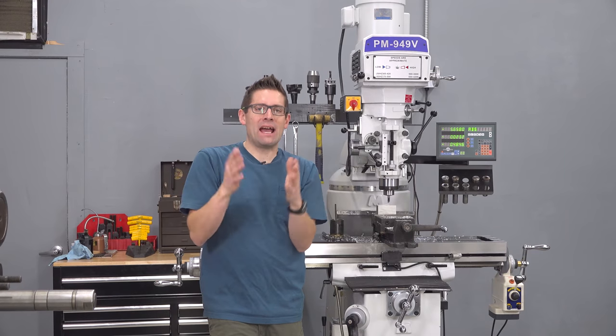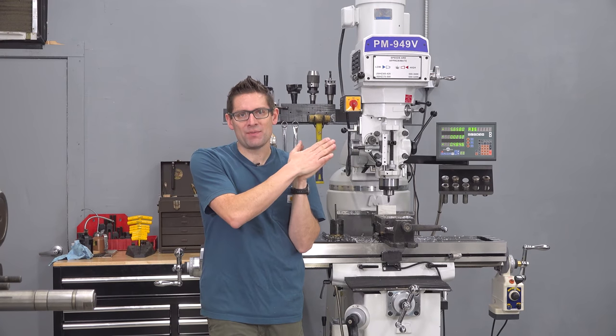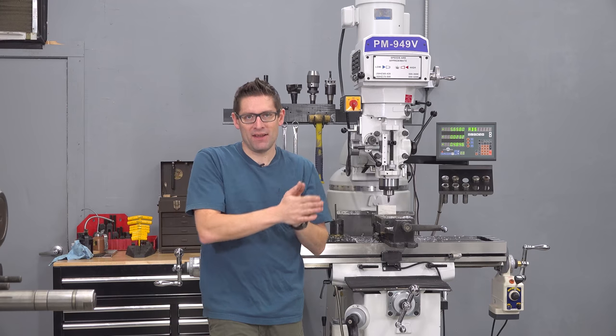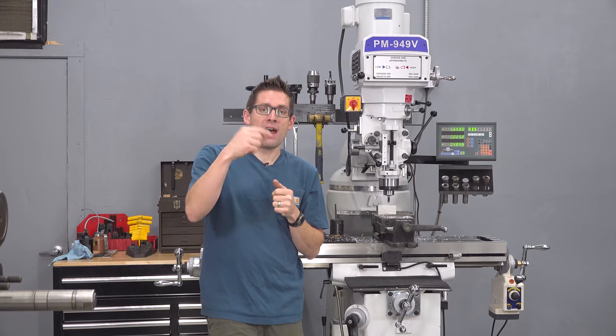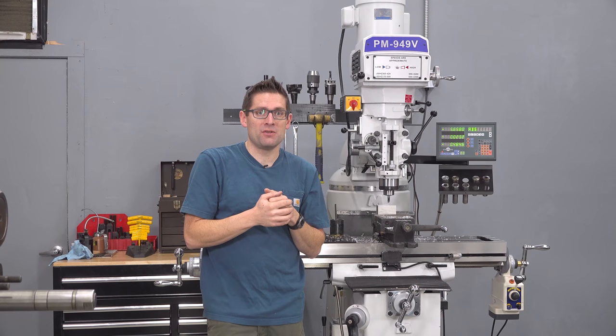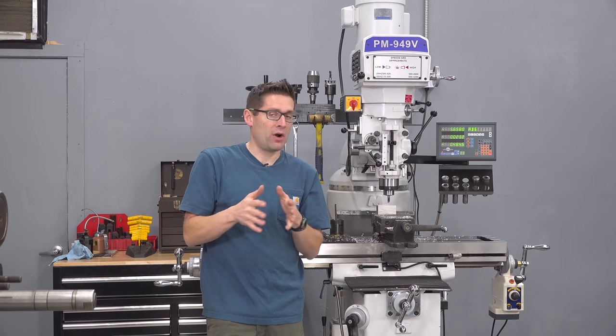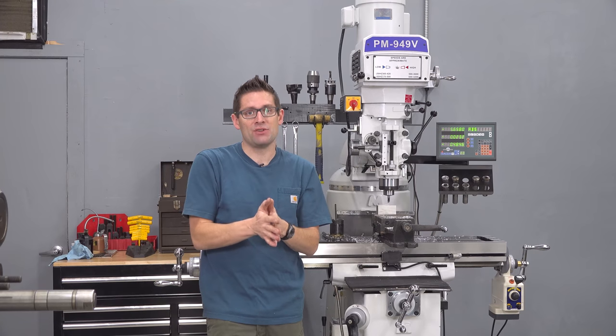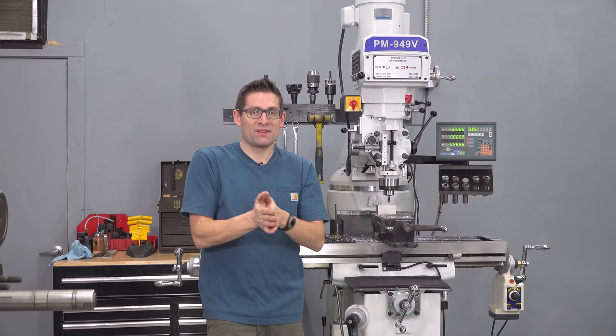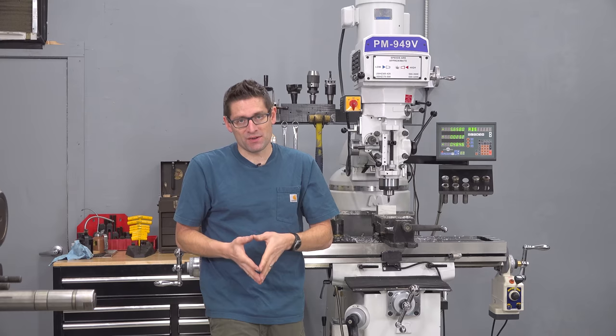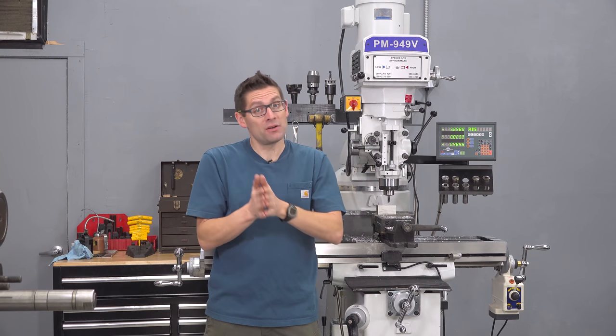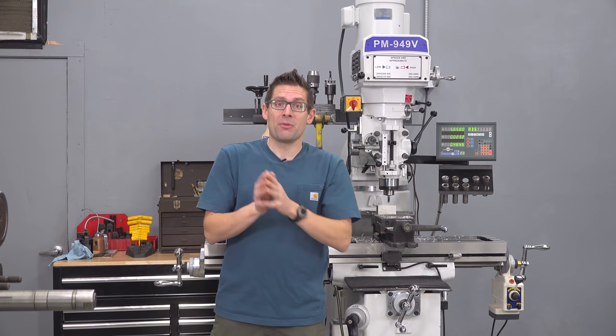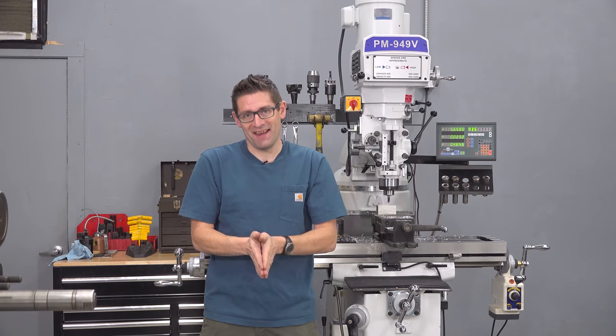There you have it, a guided tour of the Precision Matthews PM 949 TV. If you're interested in getting one of these mills, click on that first link in the video description. I'll also have a link to a full article write-up with all the detailed product specifications, a little bit more data, links to more product pages and so on. Make sure you're subscribed with notifications because we've got Fundamentals of Mill 100, 200, 300 and 400 level coming up over the next couple years. You're not going to want to miss any of that.